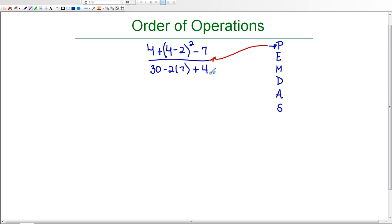This means that we need to evaluate everything in the numerator first and then evaluate everything in the denominator. So that's exactly what we're going to do here. We're going to follow the order of operations for the numerator first and then evaluate the denominator.